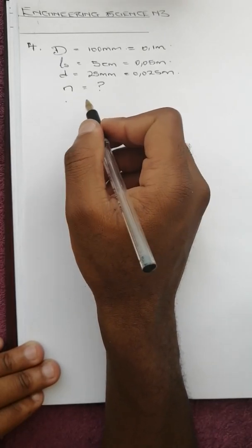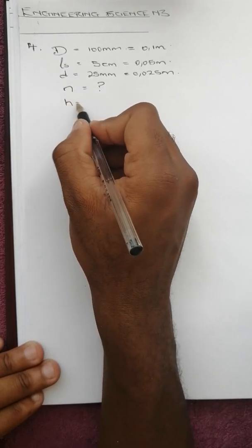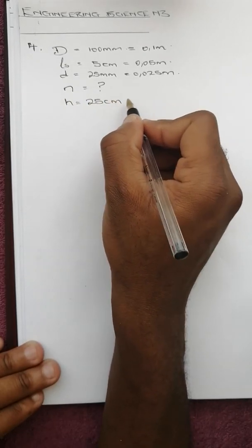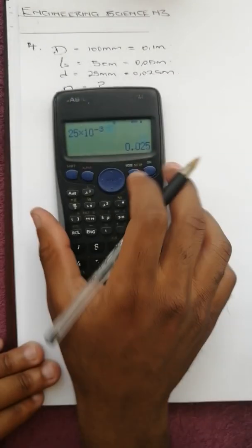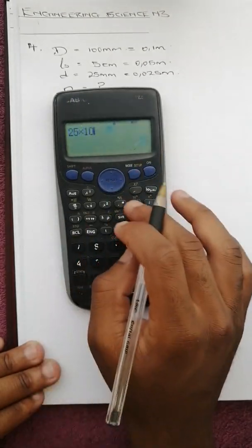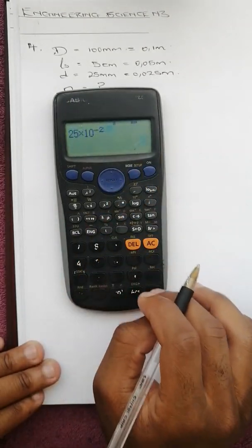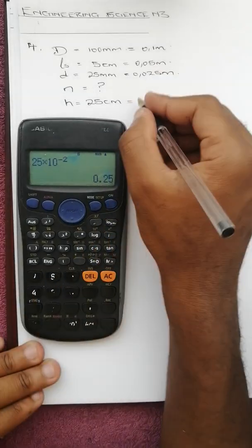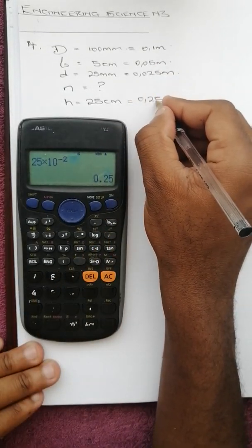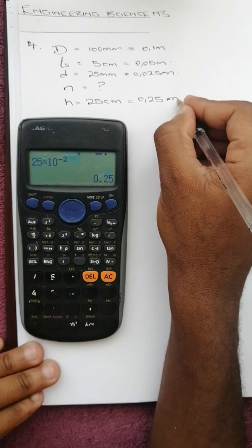We need to calculate the number of strokes of the plunger to lift the rim over a distance of 25 centimeters. So h is 25 centimeters, which converts to 0.25 meters.